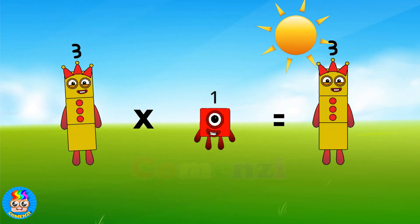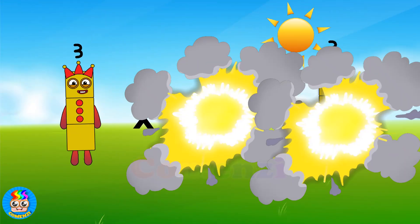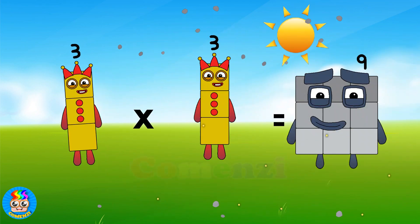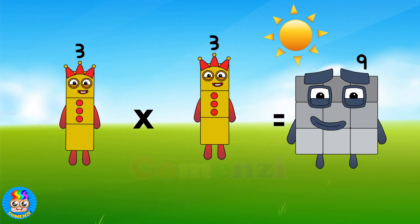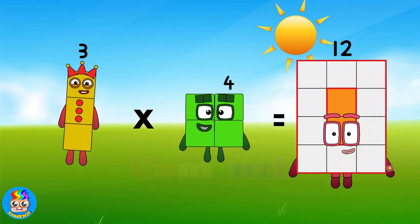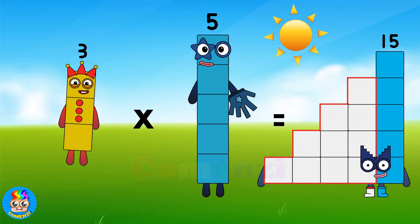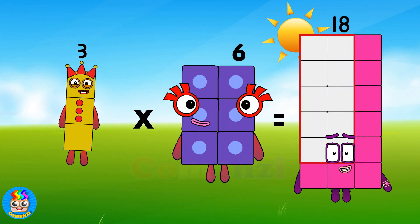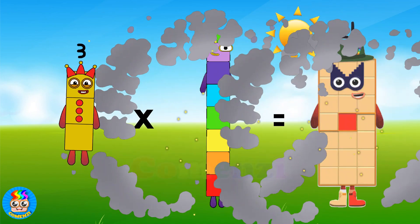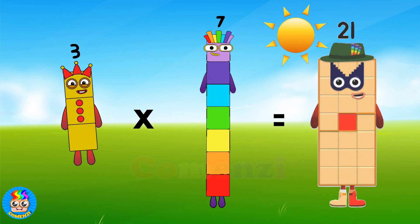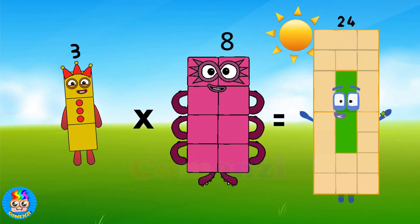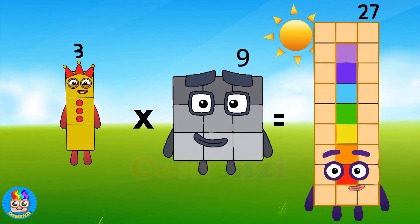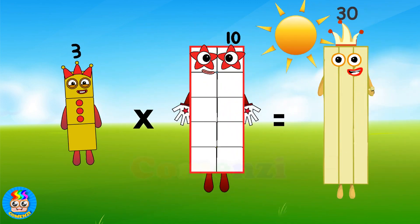Three times one is three. Three times two is six. Three times three is nine. Three times four is twelve. Three times five is fifteen. Three times six is eighteen. Three times seven is twenty-one. Three times eight is twenty-four. Three times nine is twenty-seven. Three times ten is thirty.